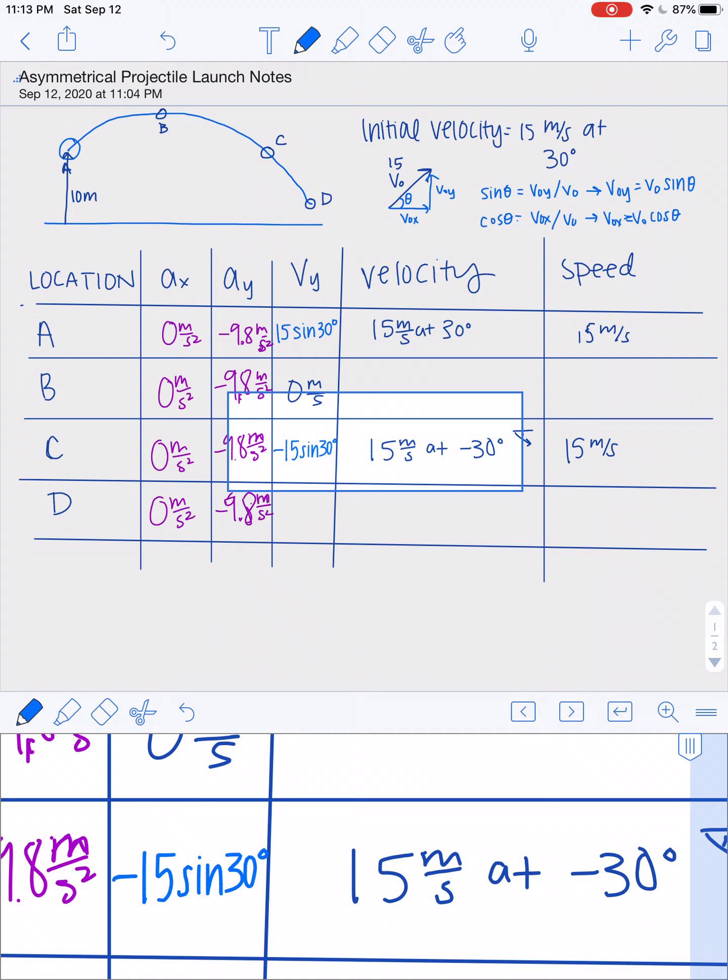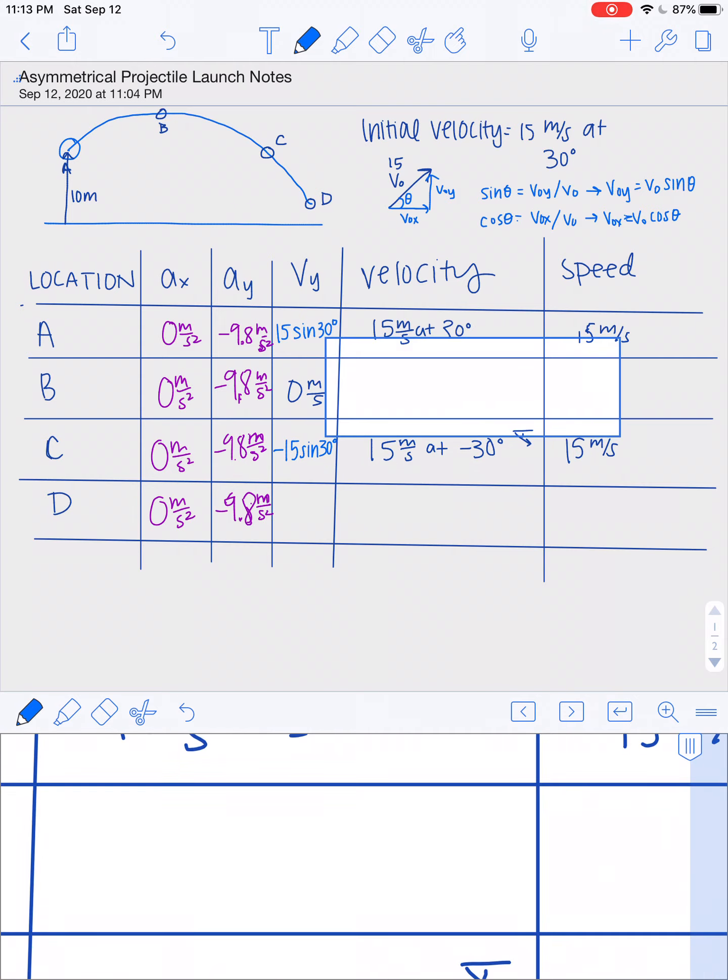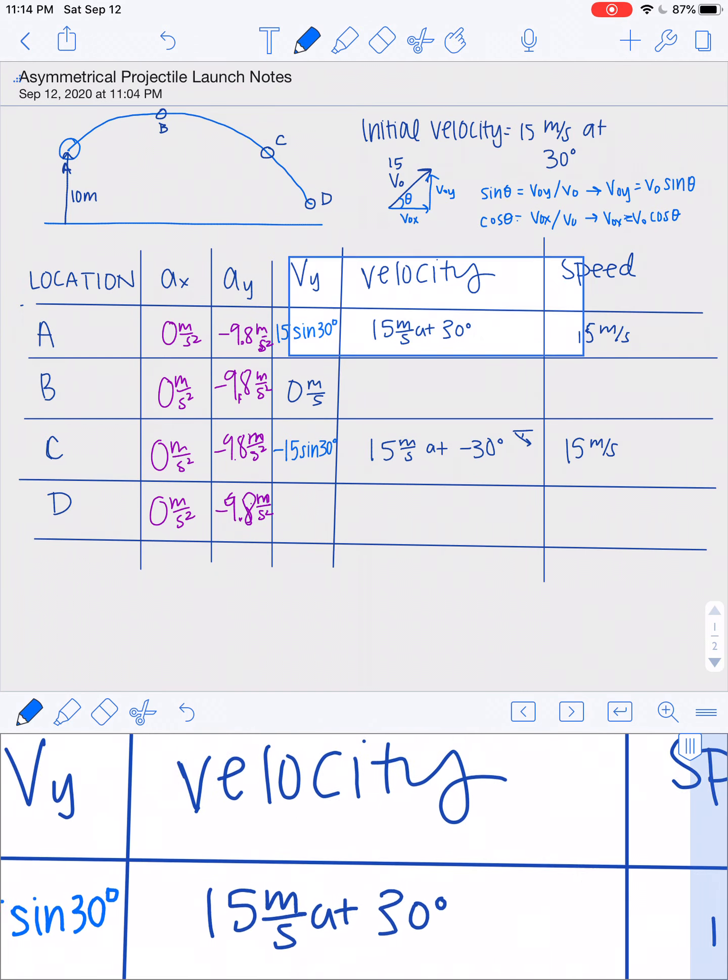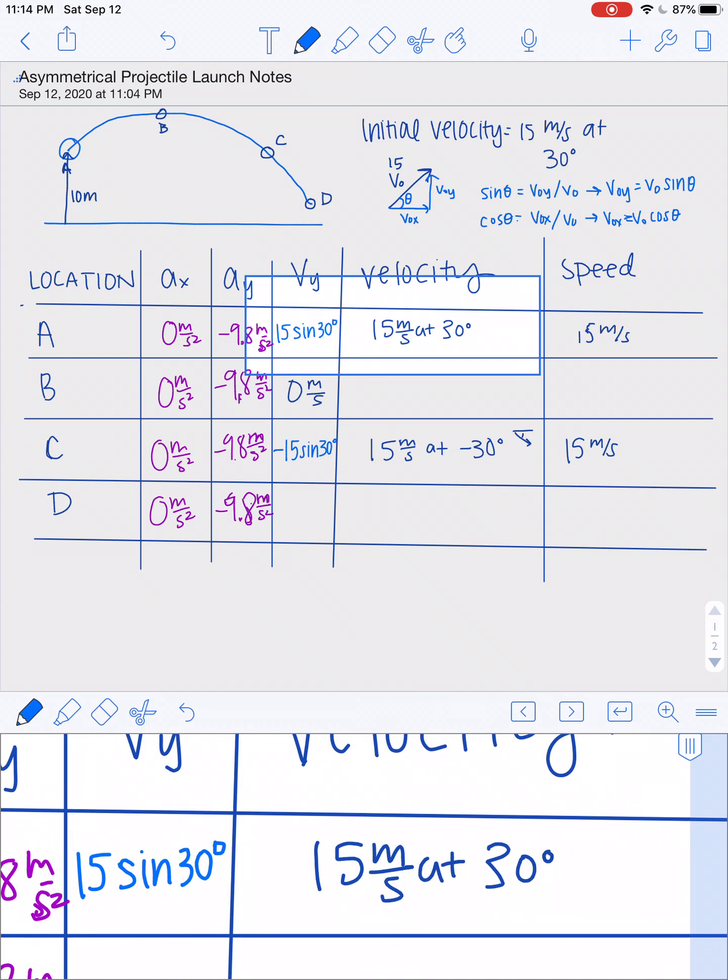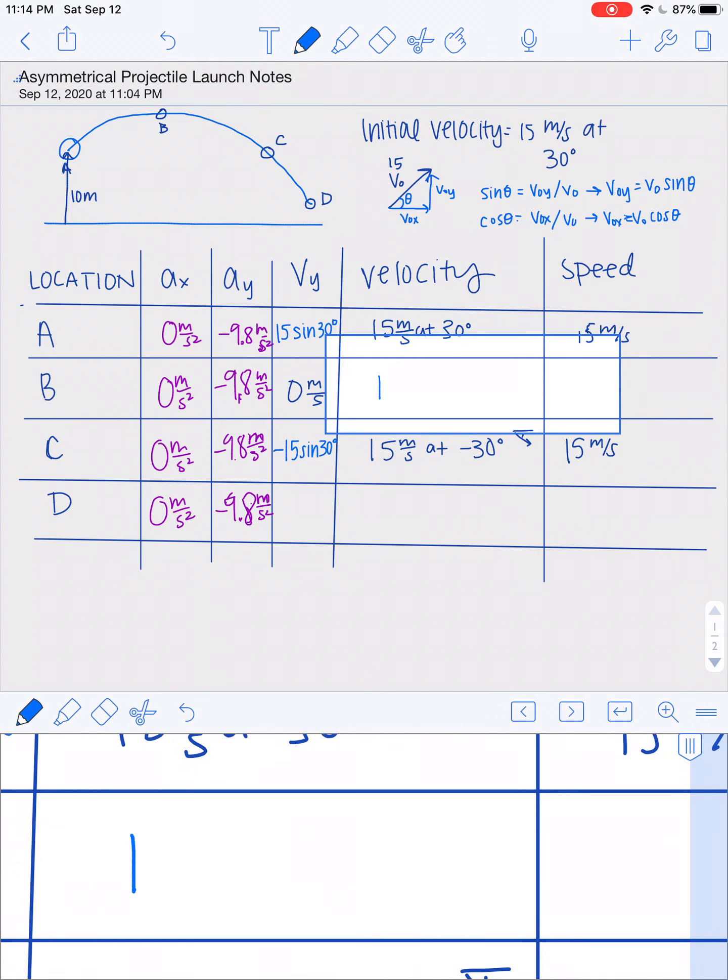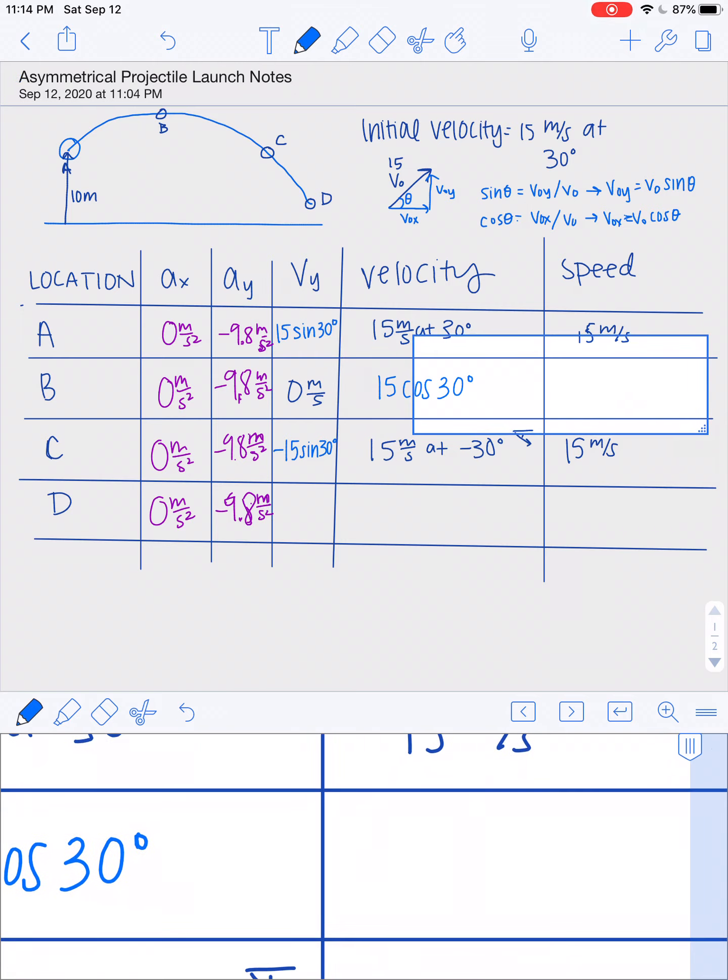And I actually also can fill in now velocity at B. It's the x component of the initial velocity, because that x component is going to stay the same throughout the entirety of the motion. So similarly, I'm going to write this like I did with the velocity at A in the y direction. And that is going to be the speed as well. And this is at zero degrees.